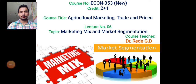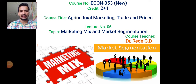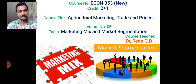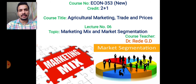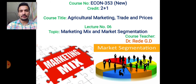Good morning students, welcome to our sixth lecture of Econ 353, that is Agriculture Marketing Trade and Prices. Today our topic is marketing mix and market segmentation. As we know, there are different activities which are involved in the marketing process.